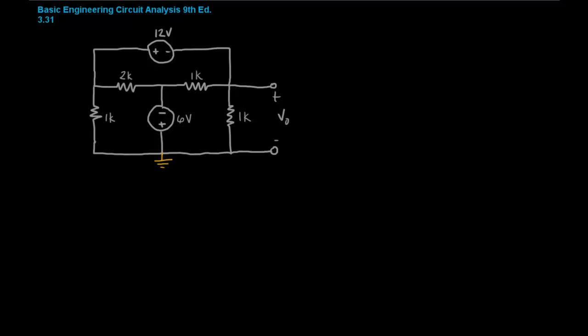Now let's label and assign node voltages. So we'll call this one V1, V2, and V3. And then we'll also assign current directions.